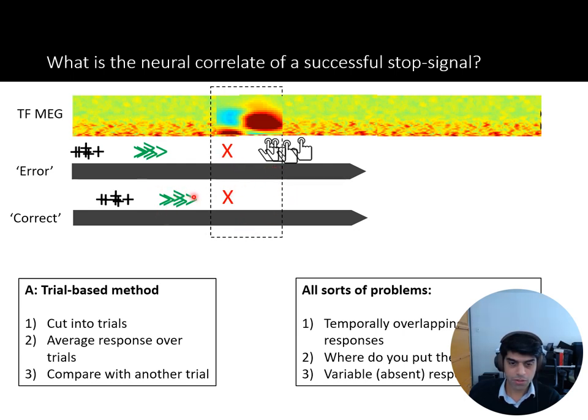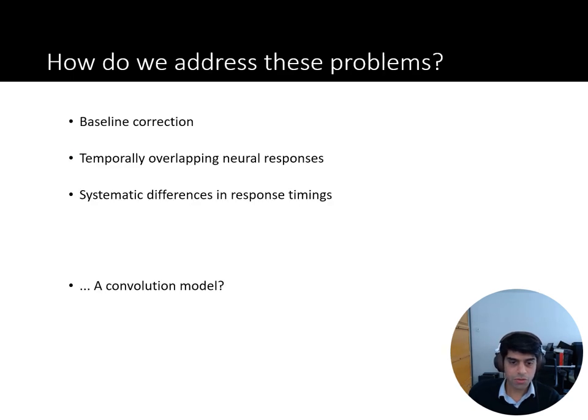For example, a response to this go is overlapping much more with the stop signal than this go, and that's because of consistent differences in between the reaction times for these two goes. There's no clear place in where you put the baseline. If you put the baseline for the stop signal here, it's much further from the fixation cross and from the go signal than here. And there's a variable or absent response in this case. You've got a response in this case and not in this case, the motor response. How do you account for that? Because we're not really interested in that. What we're interested in is the response to the stop signal. So this is problematic for the trial-based approach.